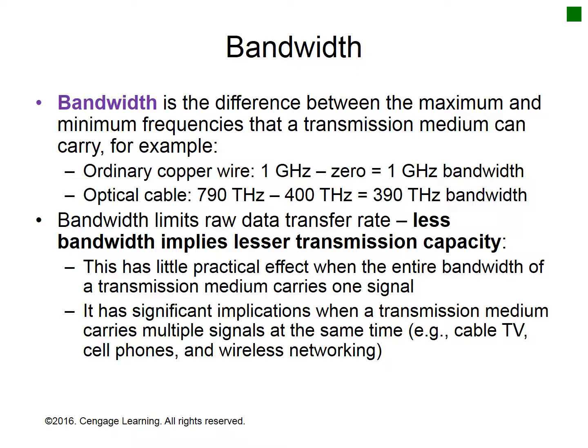Higher bandwidth also implies higher data transfer rates for digital signals, although for subtly different reasons. Digital signals are sent by using square waves, which are essentially short, powerful bursts of electrical or optical energy. However, electrical and optical energy propagate through space, wires, or fibers as sine waves.